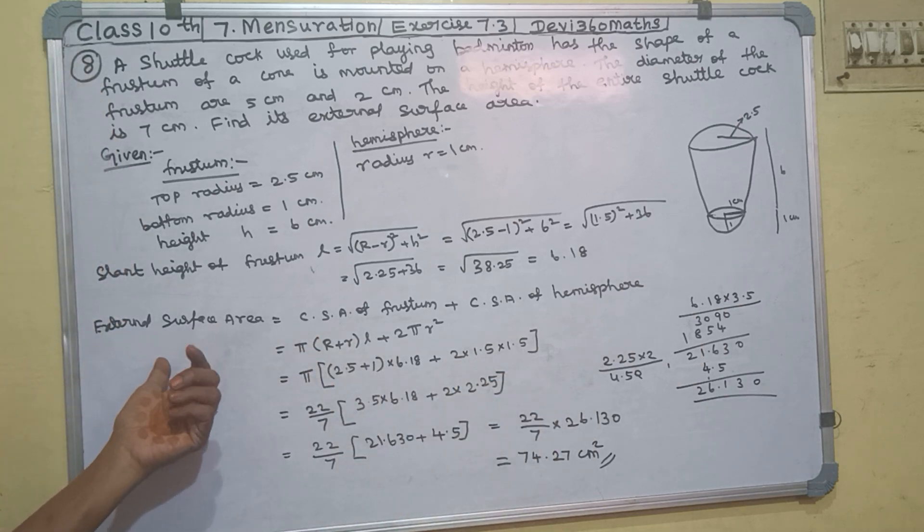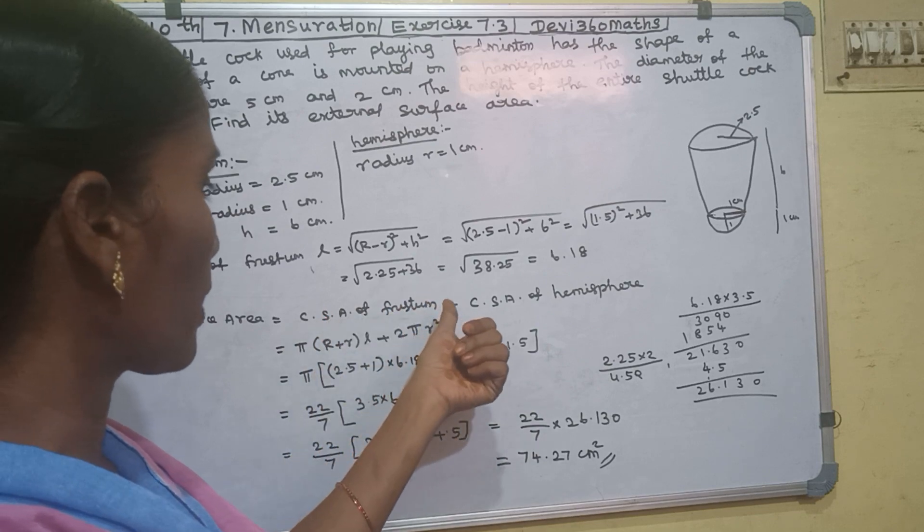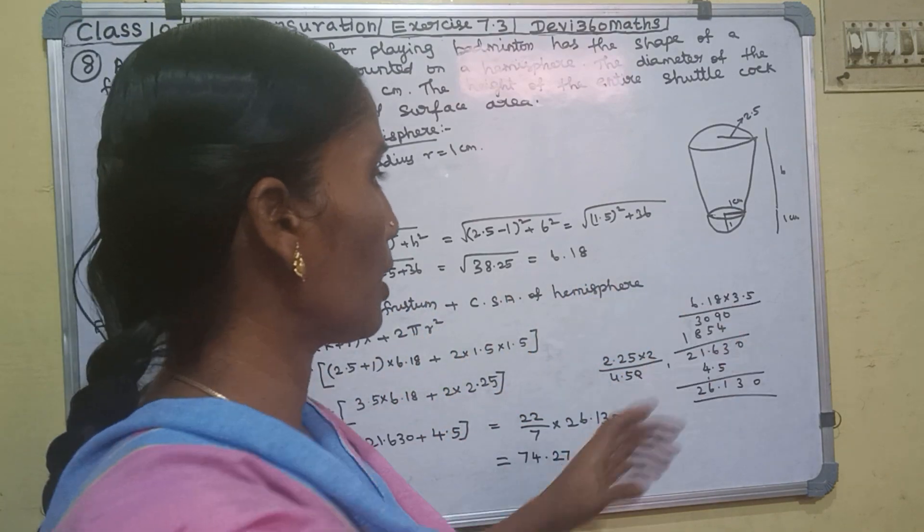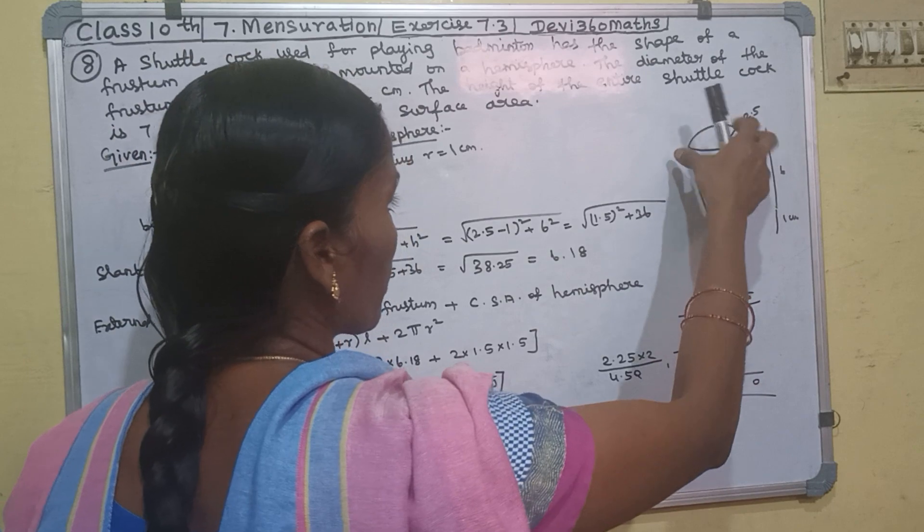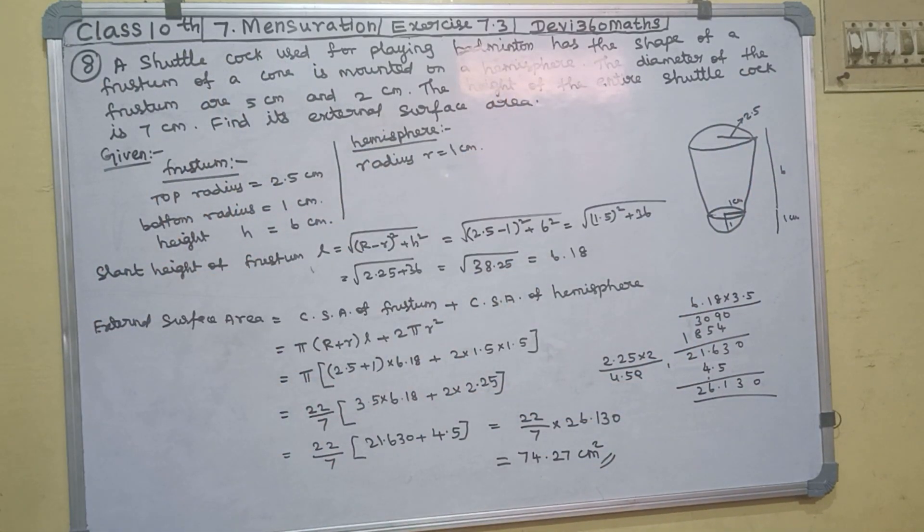We have external surface area. The curved surface area is the hemisphere plus the curved surface area of the frustum. Add these to get the external surface area.